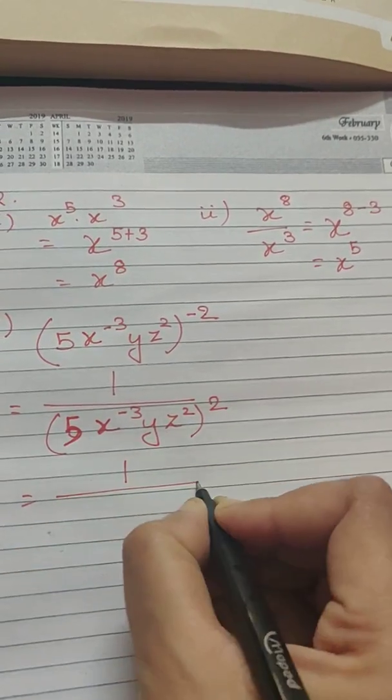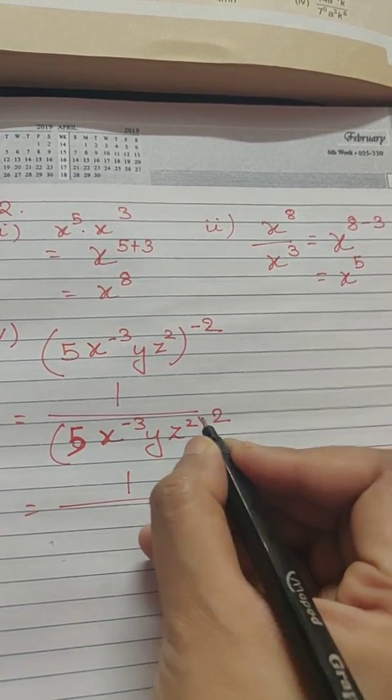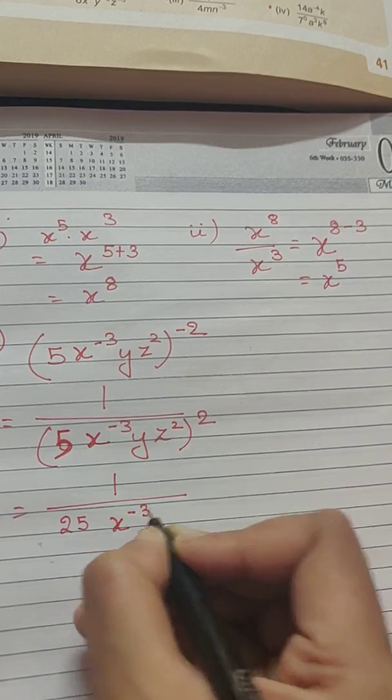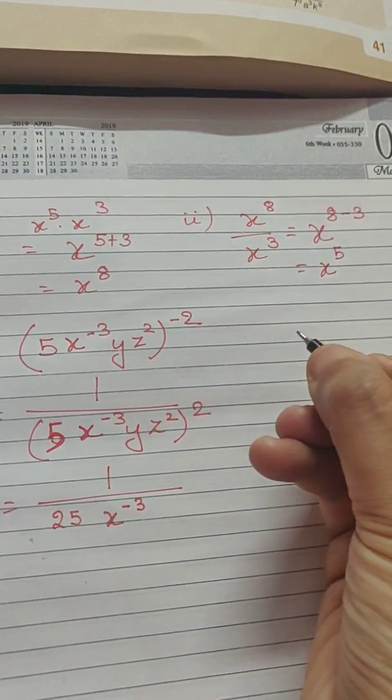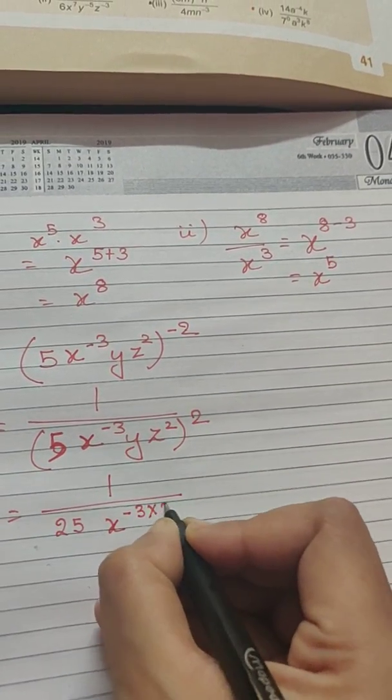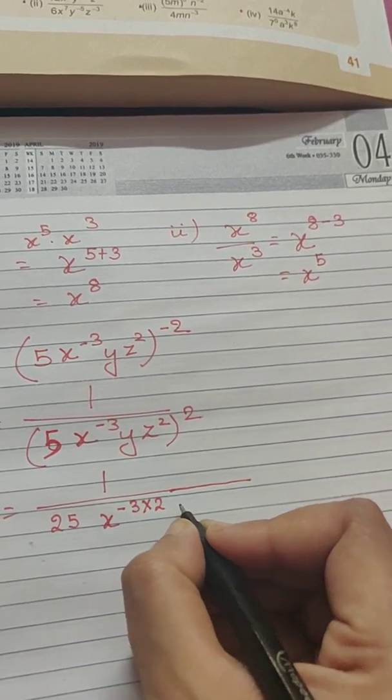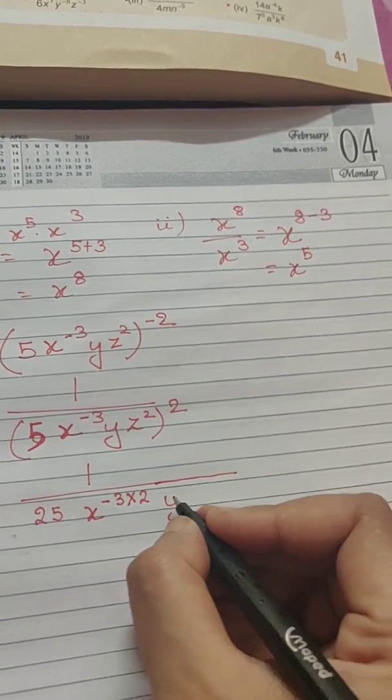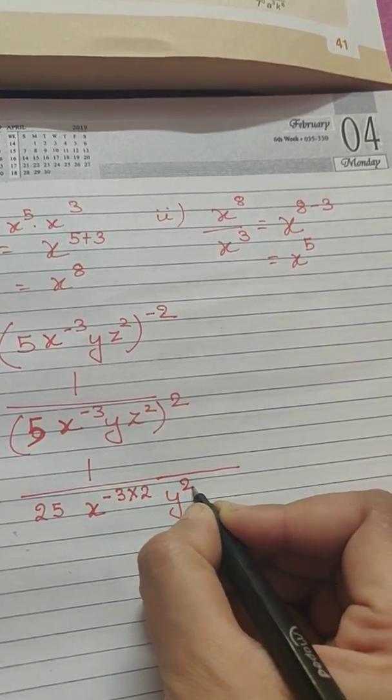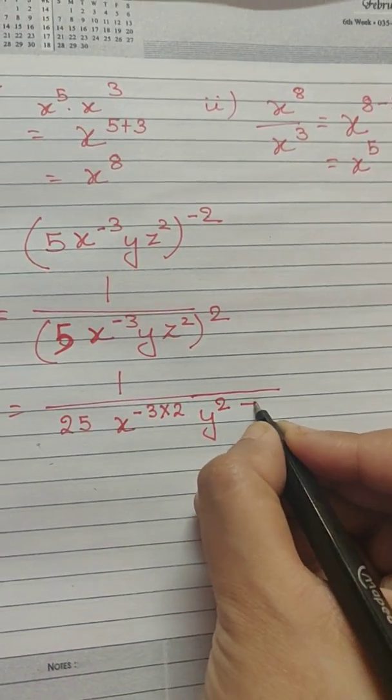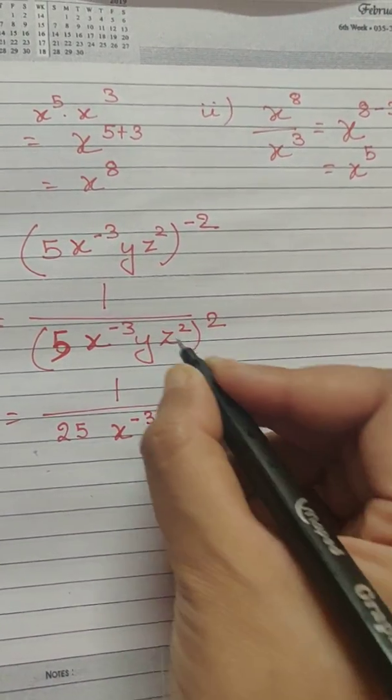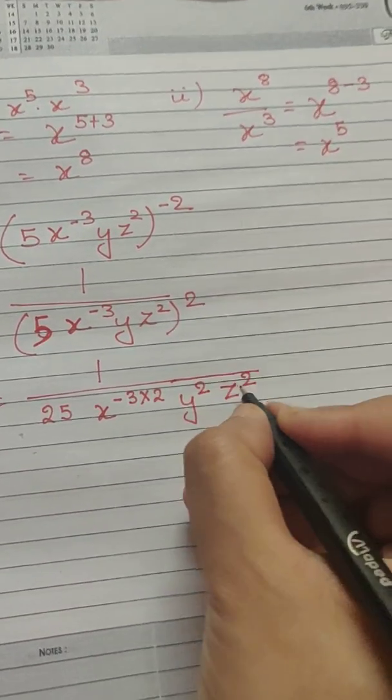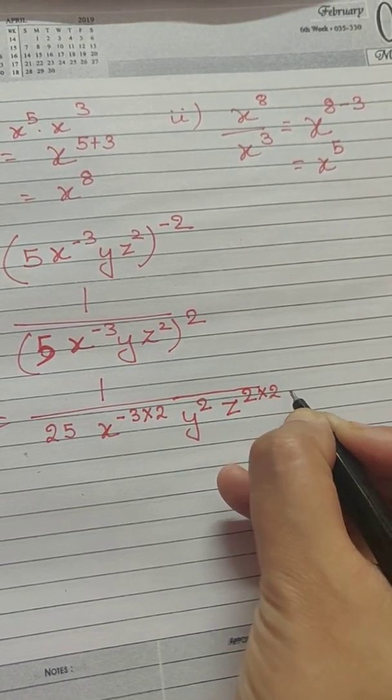So this becomes 1 by 5 to the power 2, which is 5 into 5, that is 25. x to the power minus 3, which is again raised to the power 2, so this becomes x to the power minus 3 into 2. Then y had only 1 as its exponent, so 1 into 2, we write only 2 here. Then comes z, which already had 2 as its exponent, and then which was again raised to the power of 2. So according to the law, we multiply 2 here.